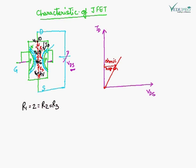It is just an example we have taken. Now you can see that with this voltage, the PN junction is reverse biased. The reverse bias increases the depletion layer. The depletion layer will be broader at the top and thinner at the bottom.